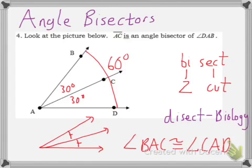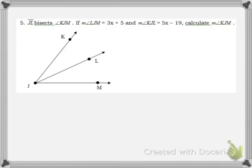Let's solve a problem using this. Here we're given the ray JL bisects angle KJM. Again, the important part is to put the information into the picture. This will make sure that the relationship verifies your equation. We get measure of angle LJM is 3x + 5. And the measure of angle KJL is 5x - 19.